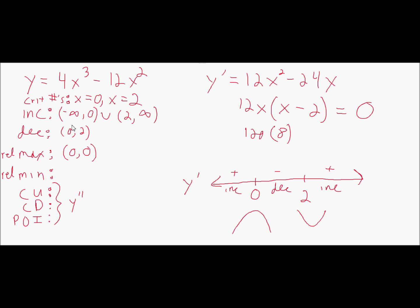The decreasing interval from zero to two is an interval, not a point — keep that straight. The relative maximum is the point (0, 0). The relative minimum happens at x equals two; plugging two into the original function: two cubed is 8 times 4 is 32, minus 48, which gives negative 16. So the relative minimum is at (2, negative 16).